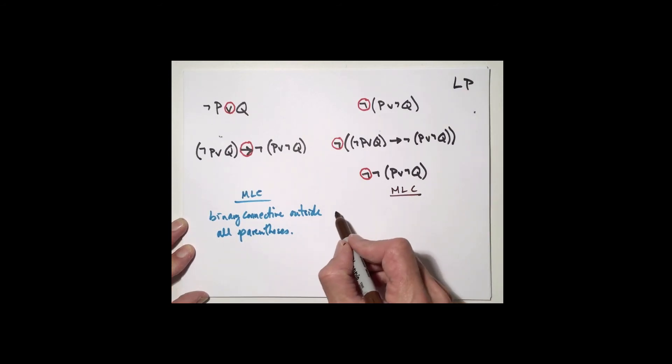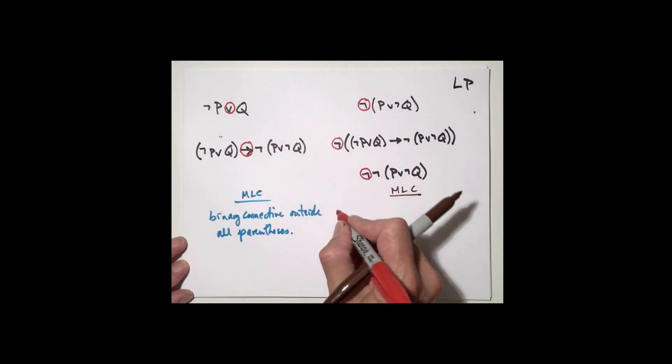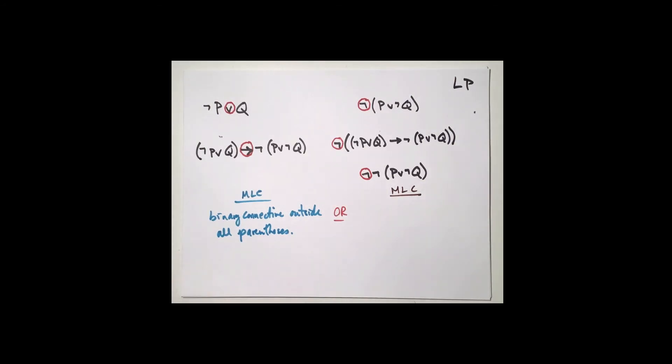And on the other side, what we learn is that, well, that's one possibility, right? The one possibility is the binary connective, the main logical connective is the binary connective outside all parentheses. The other possibility, right? So it's going to be or. Or the only other thing that can happen is that the main logical connective is the leftmost negation symbol outside all parentheses. And these are the only two possibilities.